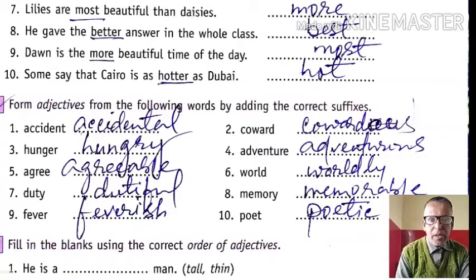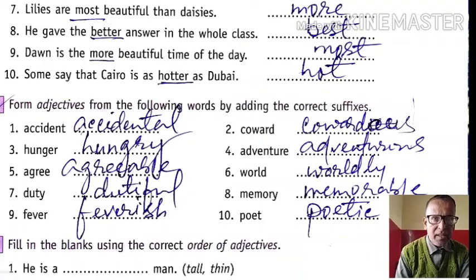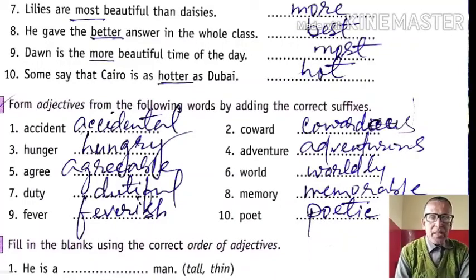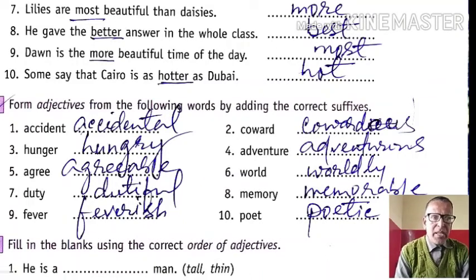So we have made adjectives by using certain suffixes. We also know that by using suffixes we can make abstract nouns, but here it is a case of forming adjectives. In this way we have done this lesson, and your examination will be covered up to lesson 1 to 4 — that is your portion for your coming examination. Till then, thank you.